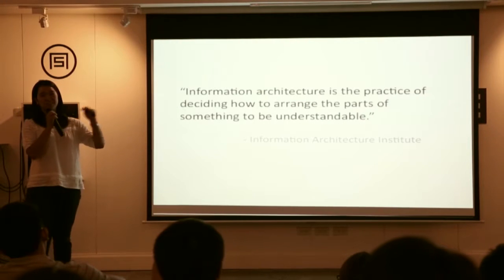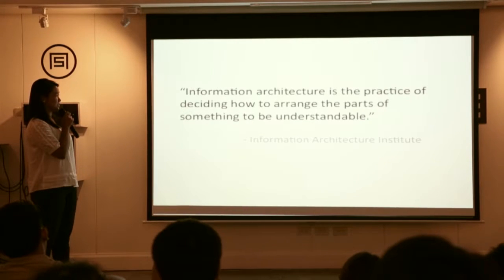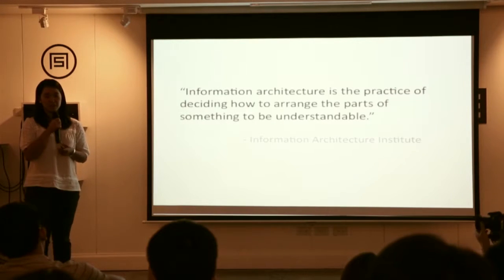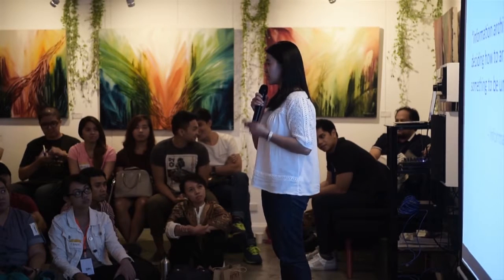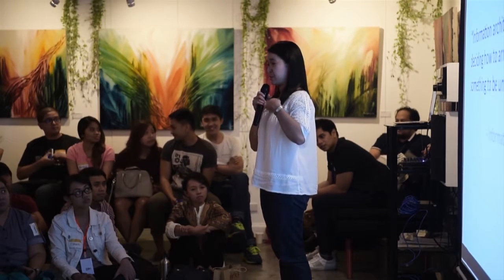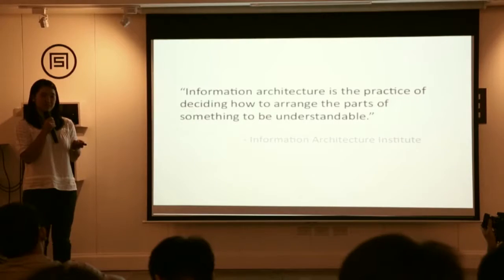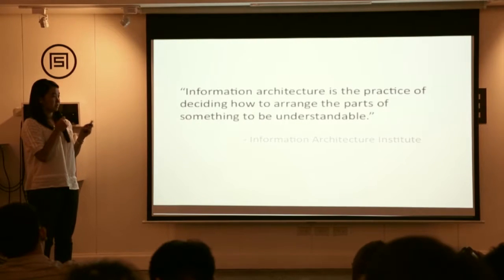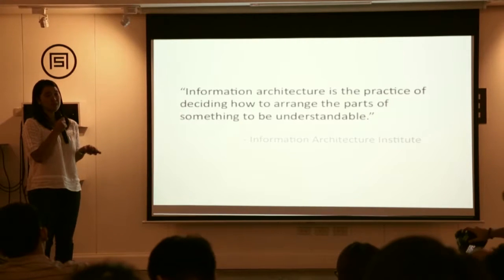I found this on the information architecture institution — I was trying to relate our job to IA. It defines IA as a practice of designing how to arrange the parts of something to be understandable. I chose government domains because when you visit a website, it's the first part that you interact with on the browser. You type in the domain of the website you want to visit.